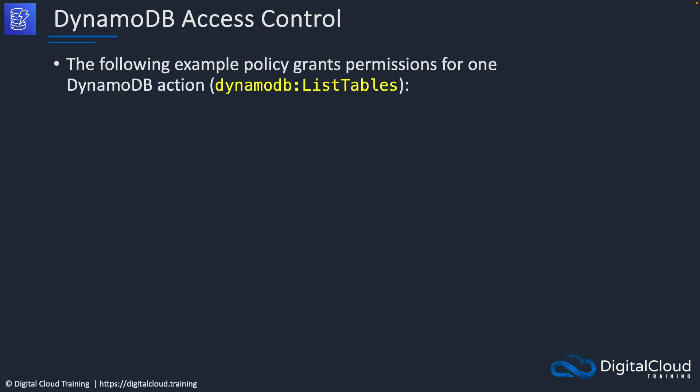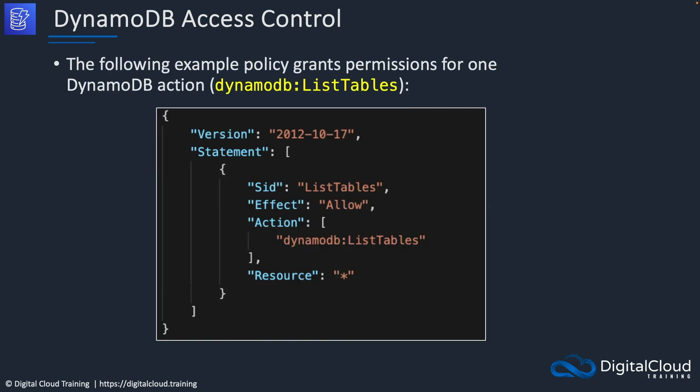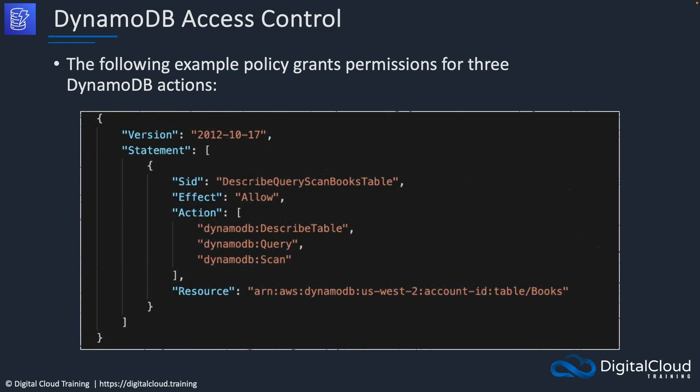By way of example, one policy grants permissions for a single DynamoDB action — with an Allow effect, the action DynamoDB ListTables, and the resource set to any wildcard. Rather than using a wildcard, you could specify a particular resource relevant to the ListTables action. Another example policy grants permissions for three DynamoDB actions: DescribeTable, Query, and Scan — with the resource specifying a particular table called 'books', so the actions are restricted to that specified DynamoDB table.